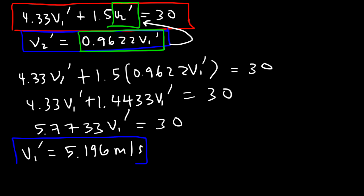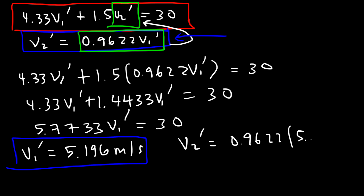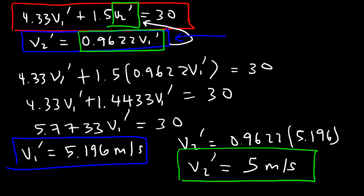Now with v1' known, we plug it into the second equation: v2' = 0.9622 × 5.196 ≈ 5.000 meters per second. So v2' rounds to approximately 5 meters per second. We now have the final velocities of both objects.